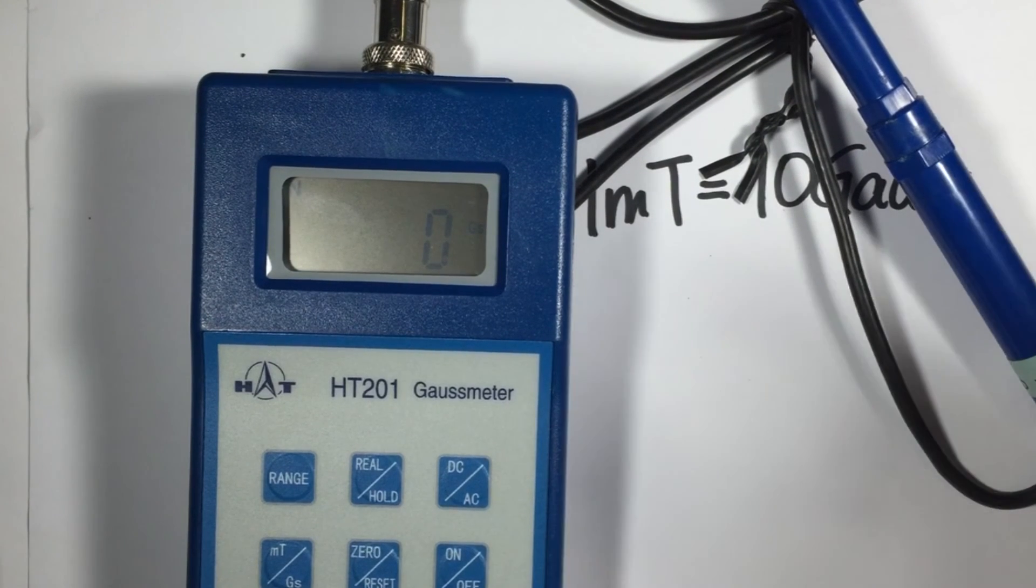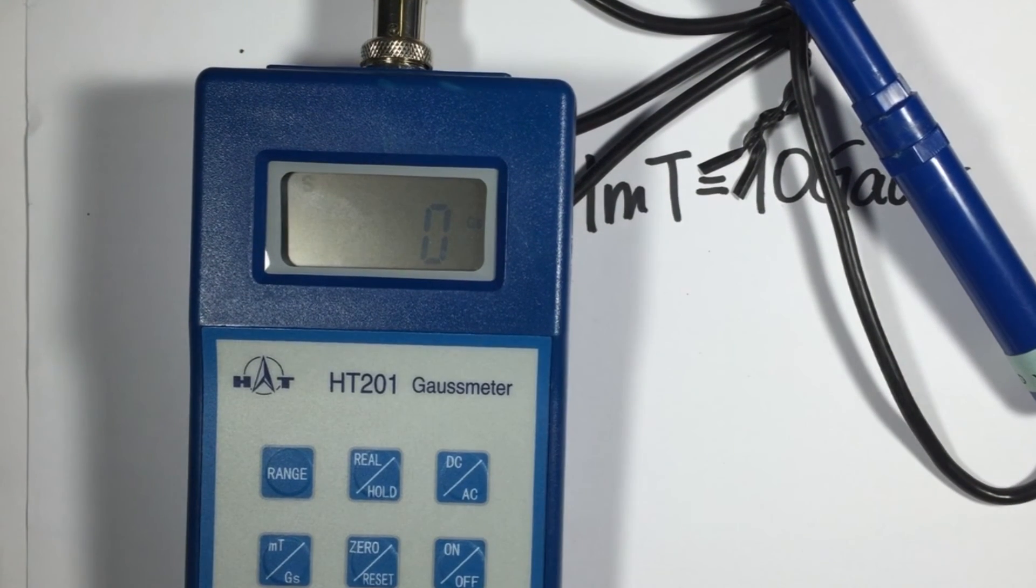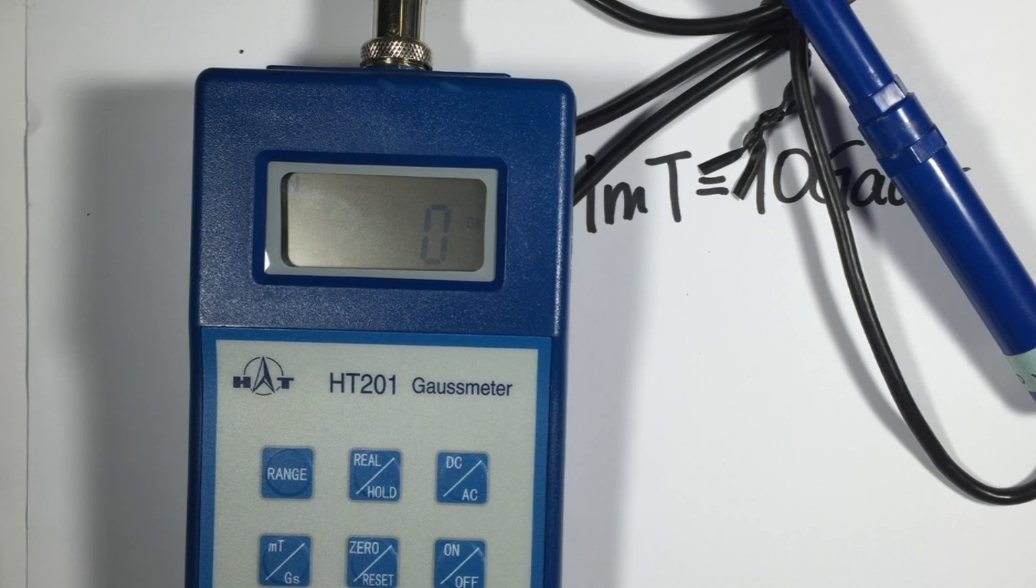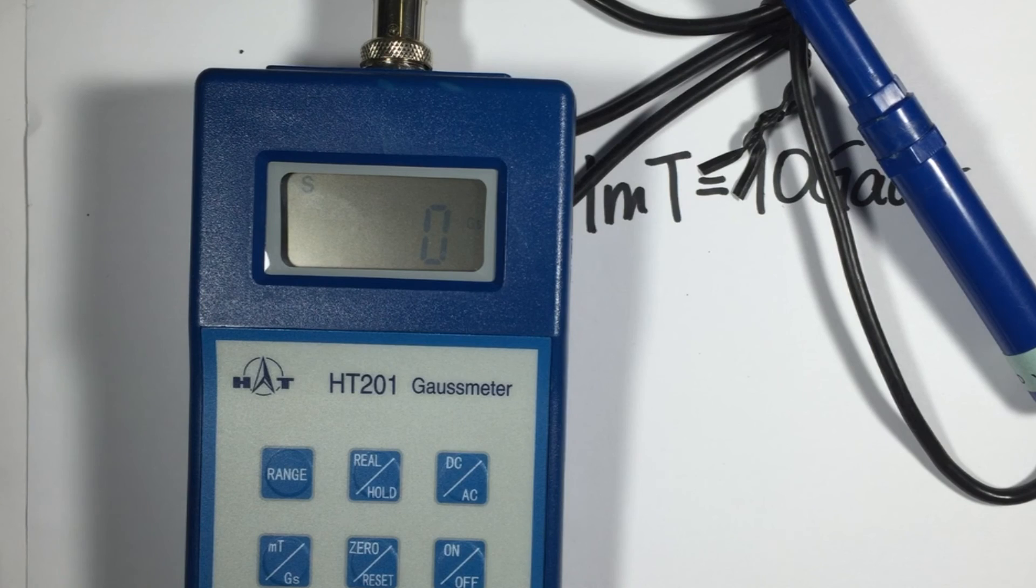Now if you don't want to use a gauss meter but you simply want to compare the different strengths of magnets, check out part three of this video series, the paperclip test.